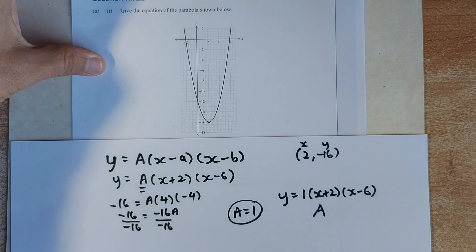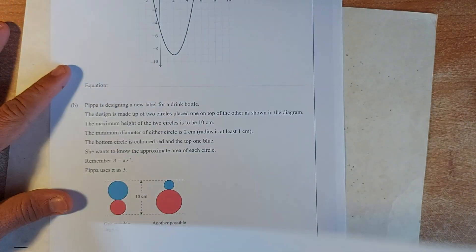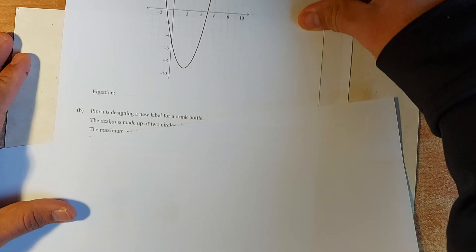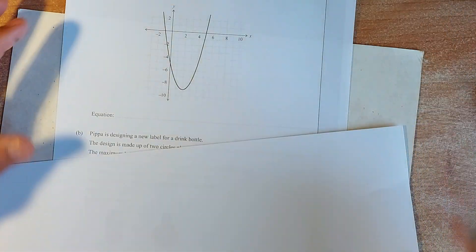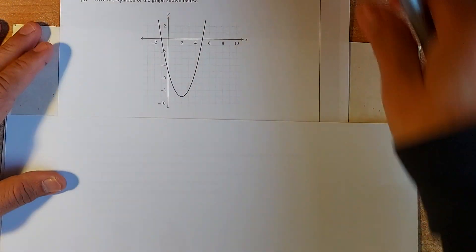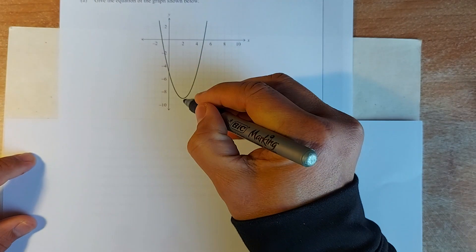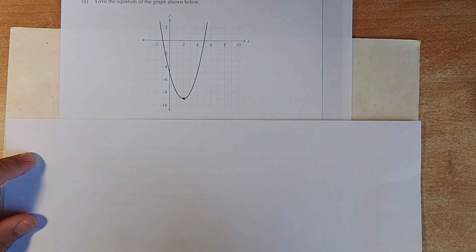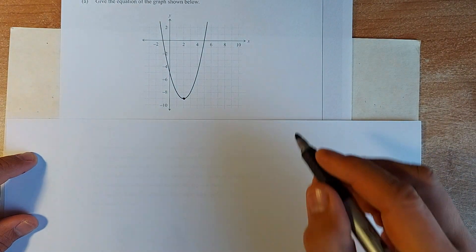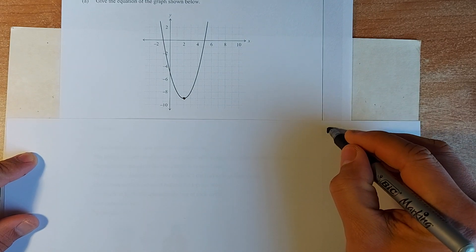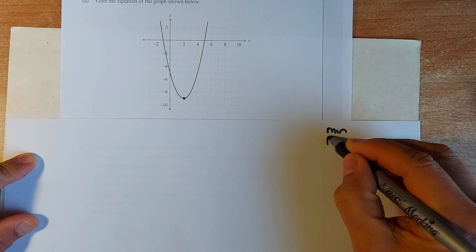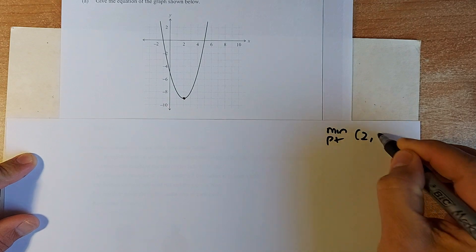We shall look at the next year's 2018 NCA exam. It looks similar. Now we are going to use the other method — looking at the minimum point. We shall look at the equation now. In this graph, you look at the minimum point. The minimum point, if you look at it, is at (2, negative 9).